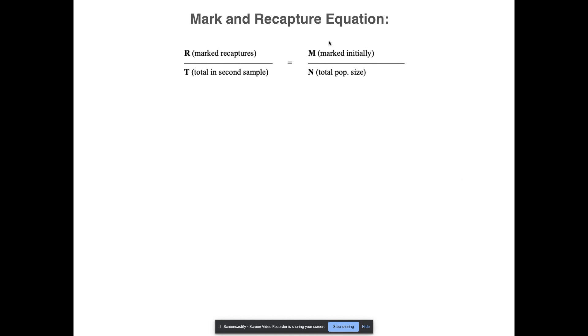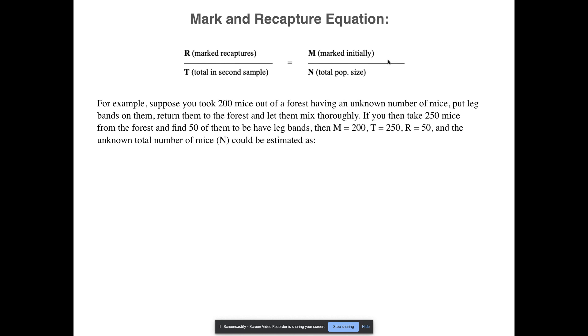The first thing that you always do is you go and find some population of organisms that you want to count, and then you mark a certain number of them. Let's say that you want to look at mice and you're going to capture some mice in a field and put a little band on their leg. In this imaginary scenario, we took 200 mice out of the forest, put a little leg band on them that's a different color so that we can tell that was us. And then you return them to the forest. You literally mark them and let them go.